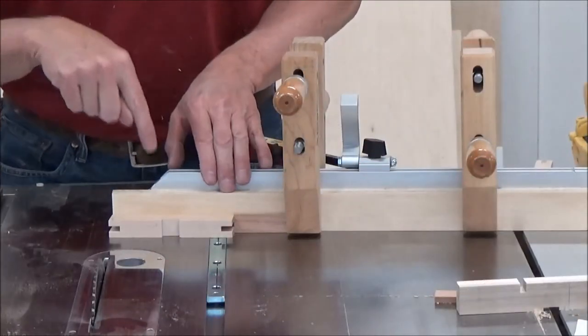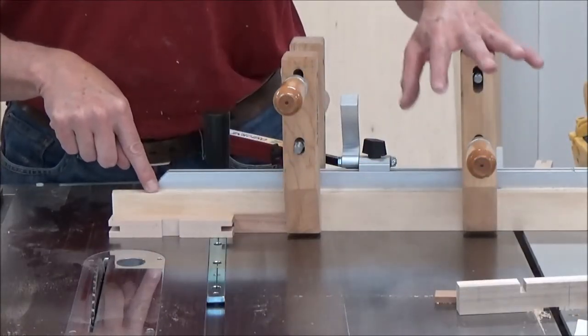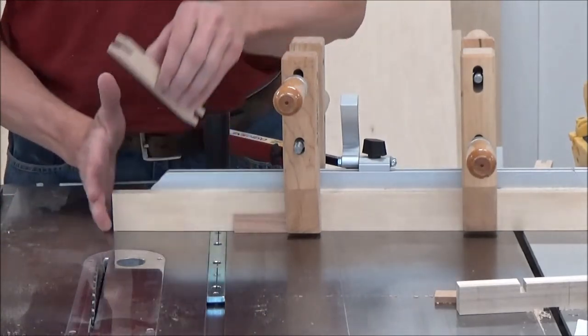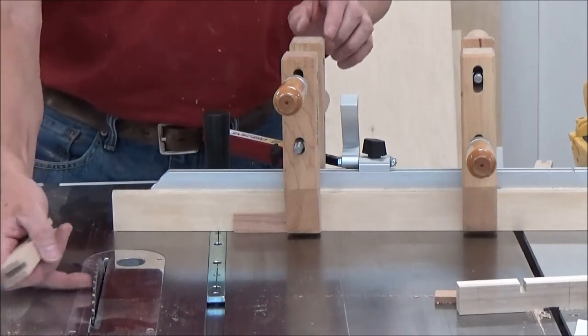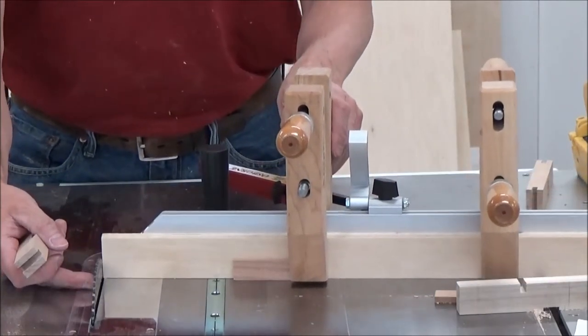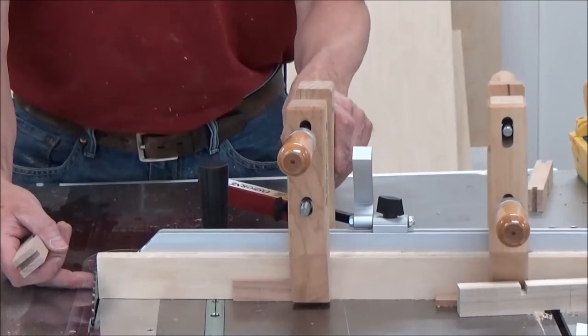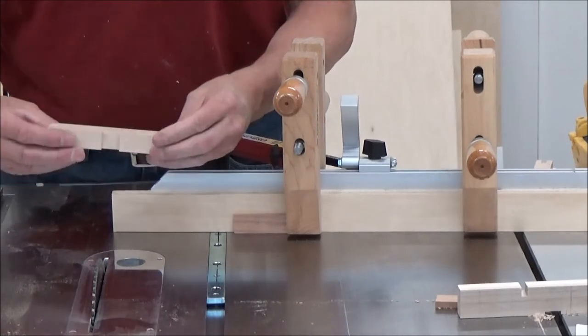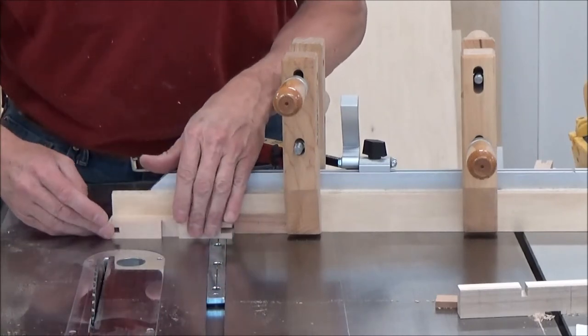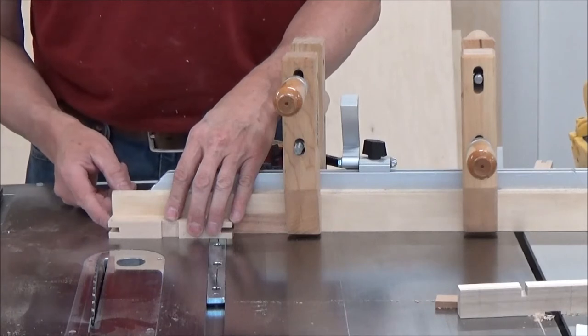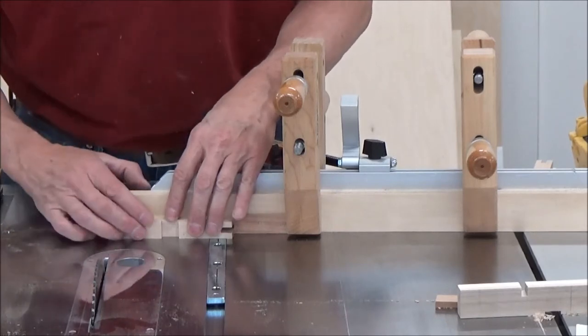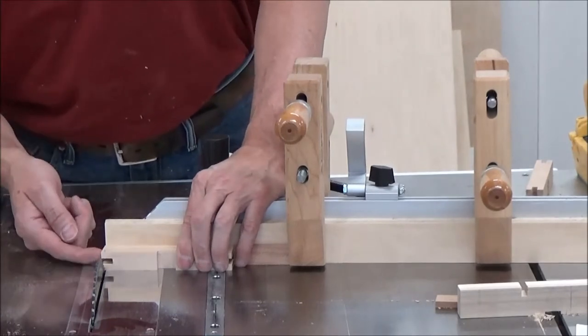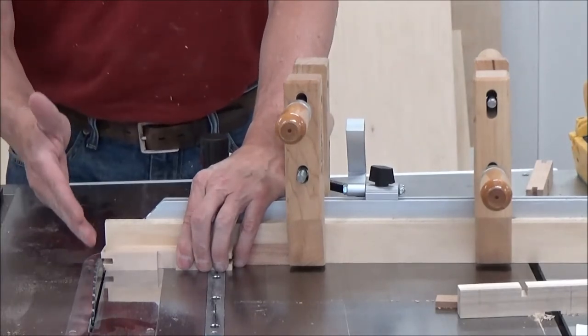I've got a backer board clamped to my miter gauge set to 6 degrees. I made this cut, and I also changed blades. This is an 80-tooth crosscut blade. So I've made this cut to get my exact cut line, and I've got this registered. The corner's just off the edge here.